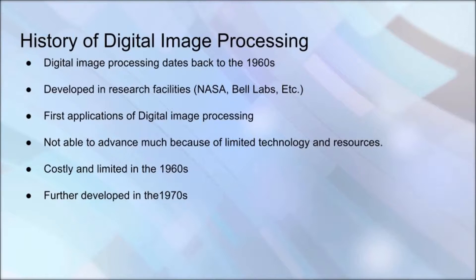However, during the 1970s, digital image processing was further developed since cheaper computers and dedicated hardware became available for image processing. As computers became more advanced, they eventually replaced dedicated hardware, and since the 2000s digital image processing has become the main method of image processing because of its versatility and low cost. With many new techniques that have developed over time, computer vision has branched out from using image processing operators in a pipeline to machine learning algorithms that include neural nets and convolutional deep learning.